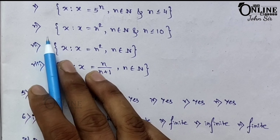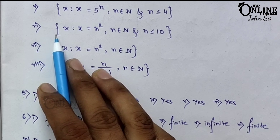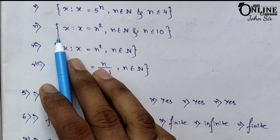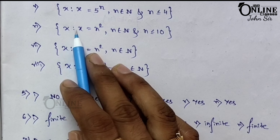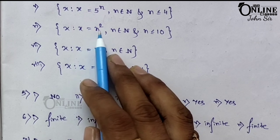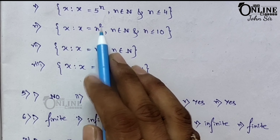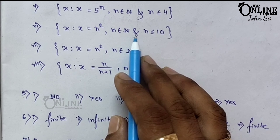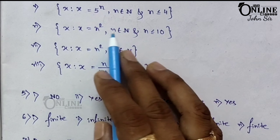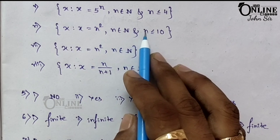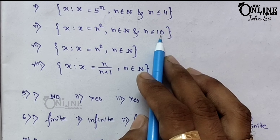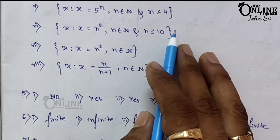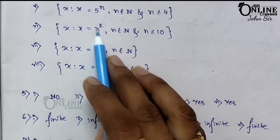Sum number 6: {1, 4, 9, 16, ..., 100}. Write as: {x | x = n squared, n belongs to N, n ≤ 10}. Since each value is a square of a natural number, and the last number is 100, which equals 10 squared, the boundary is n ≤ 10.